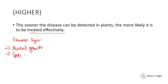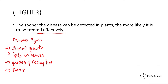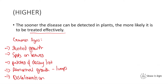Other common signs of plant disease include: spots on leaves, patches of decay or rot, abnormal growths on the plant such as lumps, a malformed stem or leaf, and also discoloration. Discoloration is a very common one — as we saw with the magnesium ion deficiency, it can lead to the plant's leaves turning yellow. These are the signs we need to look out for in order to treat plants effectively.